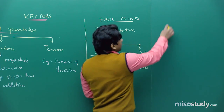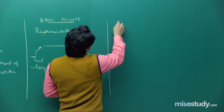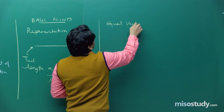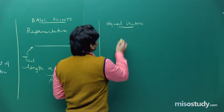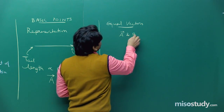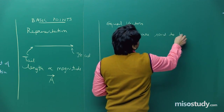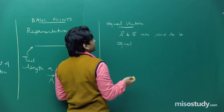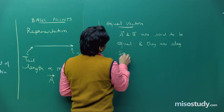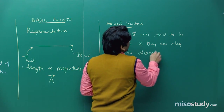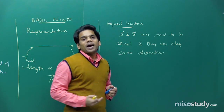Let's talk about types of vectors. The first type is equal vectors. Two or any number of vectors are said to be equal vectors if they have the same magnitude and are directed along the same direction. So two vectors A and B are equal vectors if they have the same magnitude and same direction.